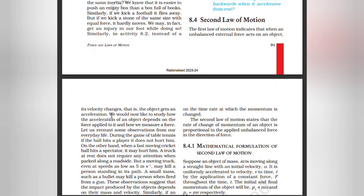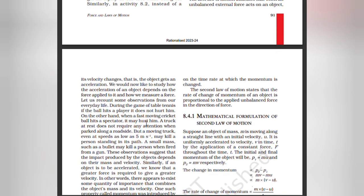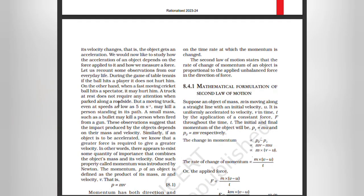Second law of motion. The first law of motion indicates that when an unbalanced external force acts on an object its velocity changes — that is, the object gets an acceleration. We would now like to study how the acceleration of an object depends on the force applied to it and how we measure a force. During the game of table tennis, if the ball hits a player it does not hurt him. On the other hand, when a fast-moving cricket ball hits a spectator it may hurt him. A truck at rest does not require any attention when parked, but a moving truck even at speeds as low as 5 m/s may kill a person standing in its path. A small mass such as a bullet may kill a person when fired from a gun.